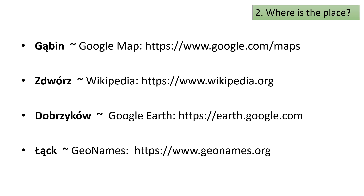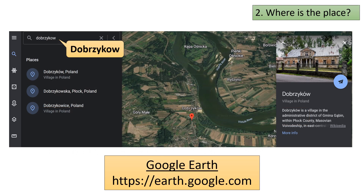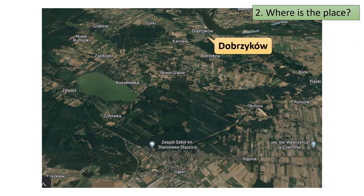Moving on, you will now use Google Earth to find Dąbróżka. Open up Google Earth and enter the name of the place — again, you can skip the special characters. Once Google Earth has found the place, zoom out to see where Dąbróżka is located. You will see that it is located near both Zdwóz and Gąbin, two places we have already associated with the Polivoda family.